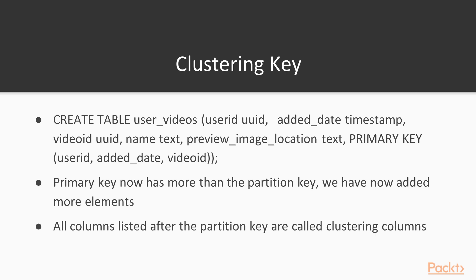The second very important concept in Cassandra is the clustering key. Let's create a table called 'user_videos' that has user_id, added_timestamp, video_id, name, and preview image location. It has a compound primary key: user_id as the partition key, and added_date and video_id as clustering keys.